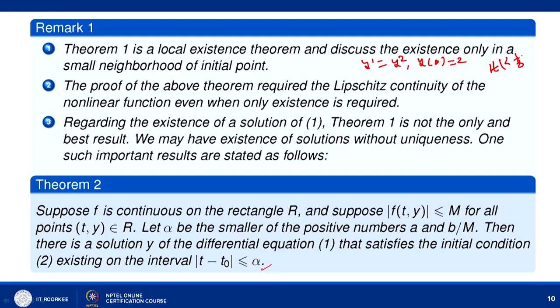The theorem not only guarantees existence but also guarantees uniqueness of the solution. But in some cases we need only existence, and this is a kind of strict theorem requiring more. In this regard, Theorem 1 is not the only or best result. We have one more result which gives existence of a solution without guaranteeing uniqueness.